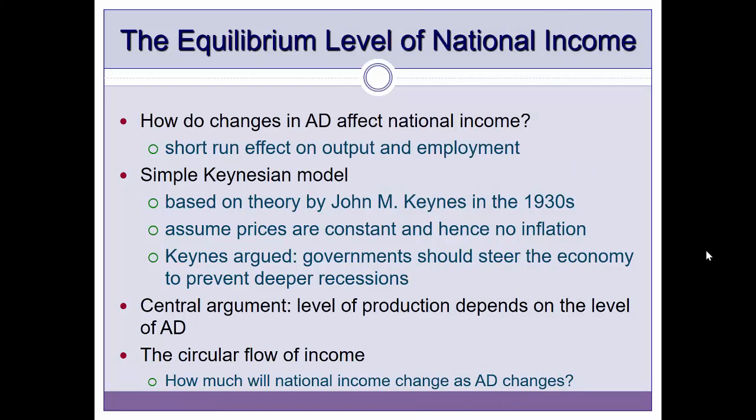In this video we will extend the original circular flow of income model into a Keynesian model. The idea is to understand how aggregate demand affects national income. In a simple model, aggregate demand or injections — expenditure on domestically made goods and services — stimulate income. We will now formalize this simple model using ideas from the simple Keynesian model.